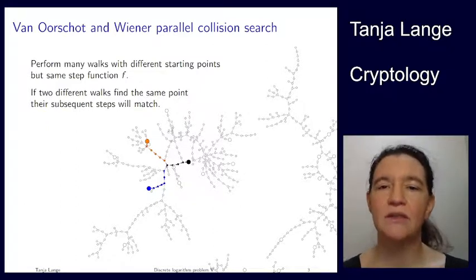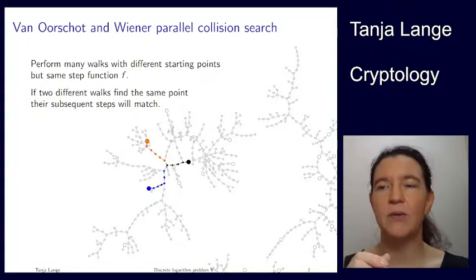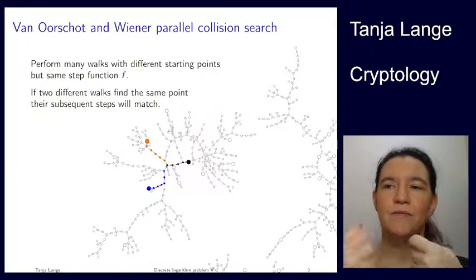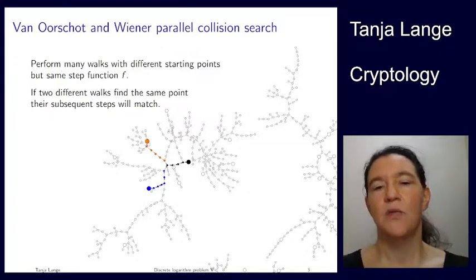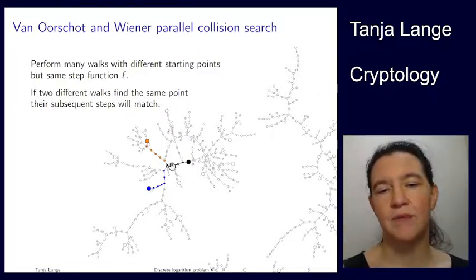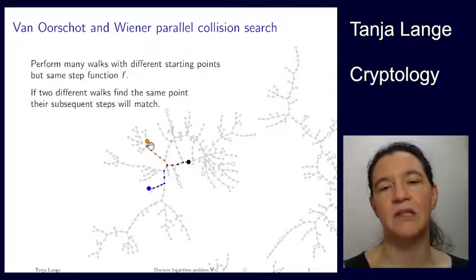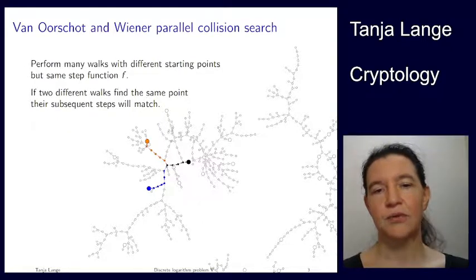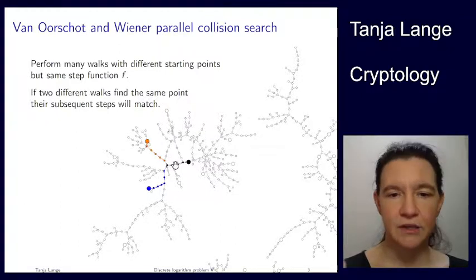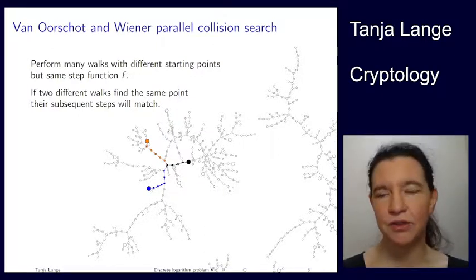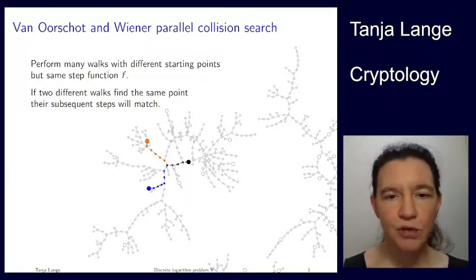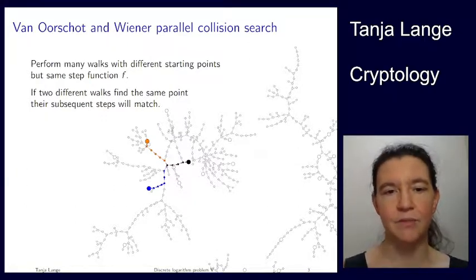The problem is we don't have this simultaneously. With cycle-finding we had one single walk and massaged it into colliding by accepting a few extra steps. But if this path is much shorter than that path, it's not that at step 9 they're both hitting this point — one might hit it at step 7 and the other at step 9. Seeing that they would be walking together once they meet — that's an important thing that Van Oorschot and Wiener observed when they designed a parallel collision search.